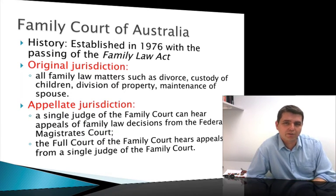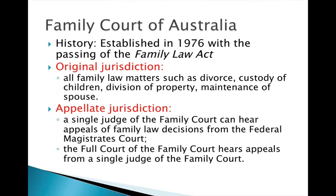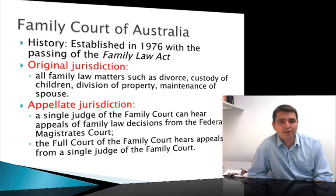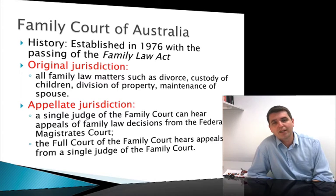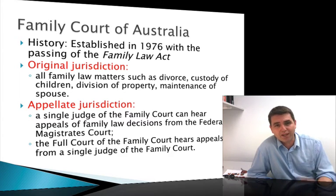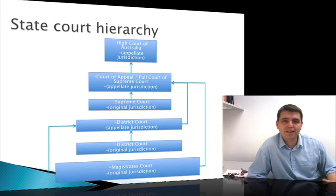The Family Court of Australia was established in 1976 under the Family Law Act. It has a broad original jurisdiction: divorce, custody of children, division of property, maintenance of the spouse — anything to do with family law. It also has an appellate jurisdiction allowing for appeals. An appeal from a federal magistrate around family law issues can be heard by one judge of the full court, but if it's been through the Family Court as original jurisdiction, the Full Court of the Family Court hears that appeal.